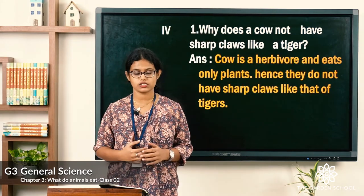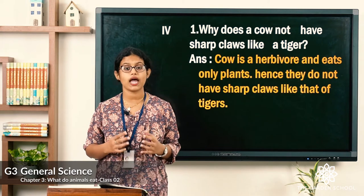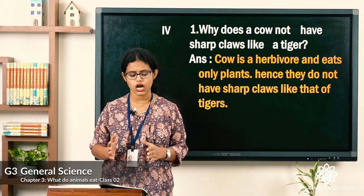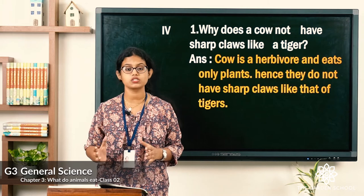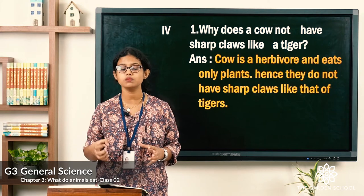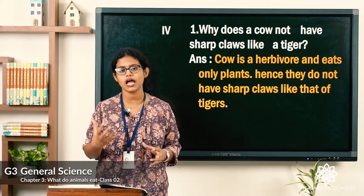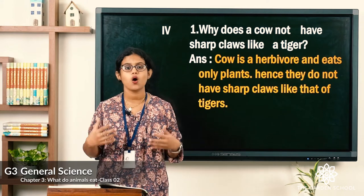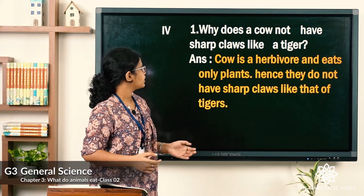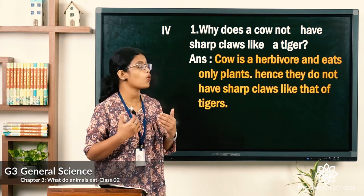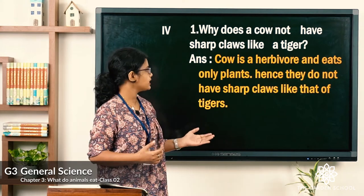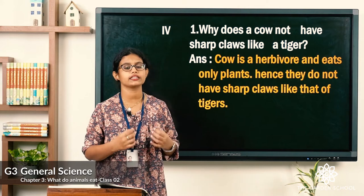Moving on to the fourth exercise — answer in two or more sentences. First: why does a cow not have sharp claws like a tiger? Tigers have sharp claws to hold animals tightly while hunting. But cow is a herbivore and eats only plants, hence they do not have sharp claws like a tiger.